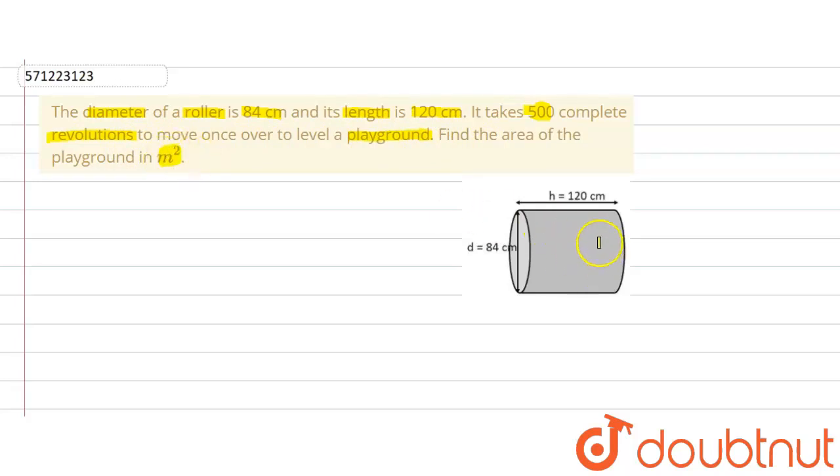This is a cylindrical roller used to level a playground. When it moves on the playground and completes one revolution, it covers an area equal to its curved surface area.